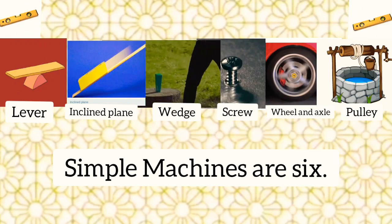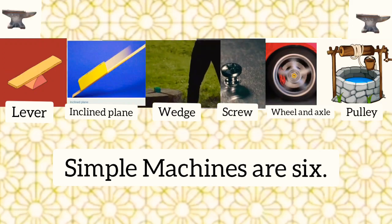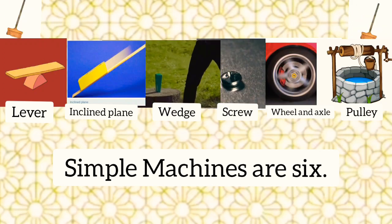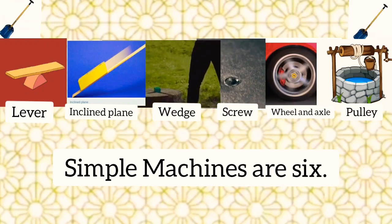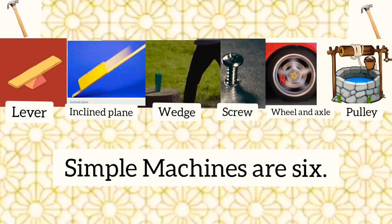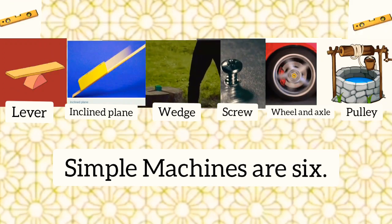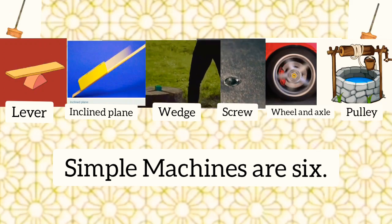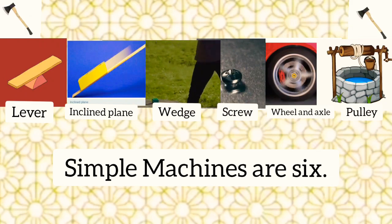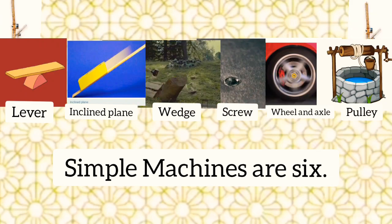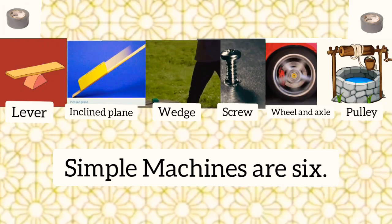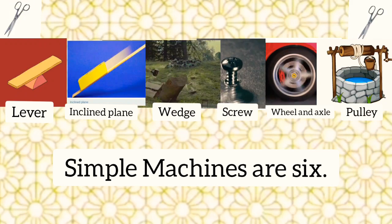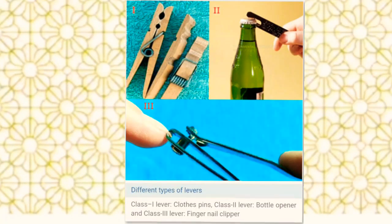Simple machines are of six kinds which we use in our daily life. Two of the machines are compound machines — they were gears and cranes. We have studied levers, inclined plane, wedge, screw, wheel and axle, and pulley. These are the six simple machines that we use in our daily life. Levers are of three classes depending on the arrangement of fulcrum, load, and effort.